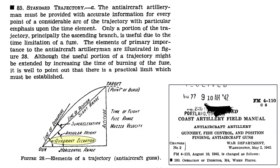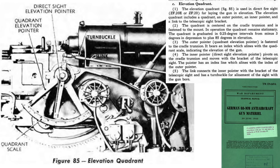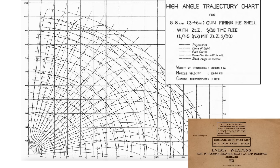Quadrant elevation, as defined in a 1942 War Department document titled Coast Artillery Field Manual, is essentially the barrel's elevation angle. A June 1943 War Department manual titled German 88 Millimeter Anti-Aircraft Material shows the location of the 88mm flak gun's elevation quadrant scale. The gun's elevation can be set from minus 3 to plus 85 degrees. A 1943 British War Office document titled Enemy Weapons shows the ballistic characteristics of the German 88mm projectile.